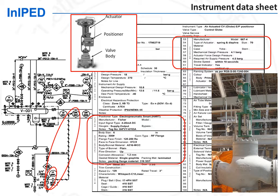It produces the instrument data sheet, also called instrument mechanical data sheet. It shows, for the body, the types of materials to be used for the body and the trim, the type of hand connections — information specified by piping. So instrumentation gets this information from piping. It also specifies the type of actuator, as well as the type of positioner, and the type of signals that will be exchanged between the instrument and the control system.